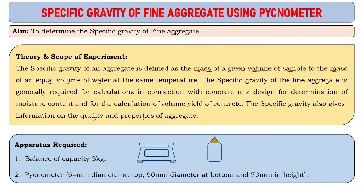Apparatus required: we require a balance of capacity 3 kg, and a pycnometer having 64 mm diameter at the top, 90 mm diameter at the bottom, and 73 mm in height. This is the pycnometer bottle with a brass conical cap available in laboratories.